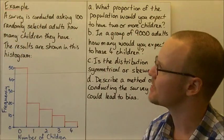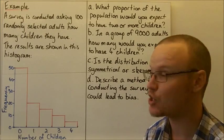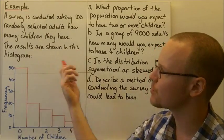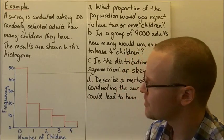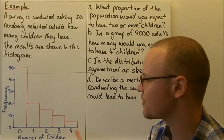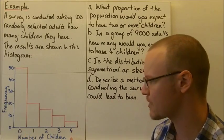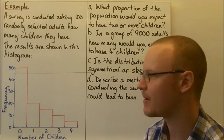So let's look at an example. So if we conduct a survey and ask 100 randomly selected adults how many children they might have, the results could look something like this in this histogram here. So the number of children's down the bottom, they're the items, so 0, 1, 2, 3, 4.